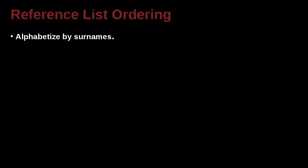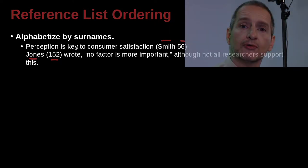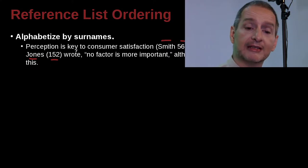Let's look at how we actually make the list and how we order it. Here's an example of some writing that would be inside your research paper or thesis. The sentence reads: perception is key to consumer satisfaction — and here we have the inline citation, Smith on page 56. The next sentence is Jones 152 wrote, followed by a quote from page 152, where the author is named Jones. So how would we go ahead and put these into the reference list?